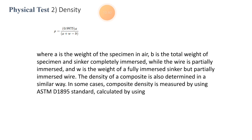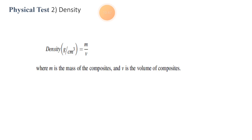In some cases, composite density is measured using ASTM D1895 standard, calculated as: Density (g/cm³) = m/v, where m is the mass of the composite and v is the volume of the composite. Thank you friends.